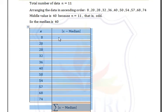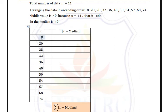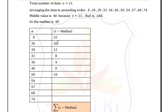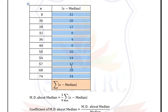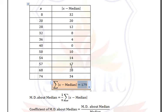Now we calculate |x - median| where median = 40. For x = 8: 8 - 40 = -32, and the absolute value is 32. For x = 20: 20 - 40 = -20, and the absolute value is 20. Similarly we find the remaining values and add all of them, giving a summation of 179.